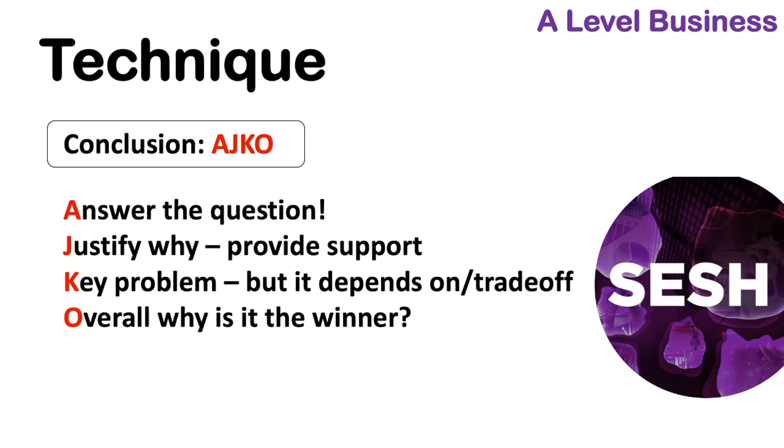What does it depend on? You could say, but it depends on this from the case study. Or there is this trade-off that's clearly going to occur, or might occur, or there's potential for it to occur. But then after you've done your A, your J, your K, you want to come back over the top with overall, why is it the winner? Why have you gone this way? Why is this clearly the correct answer?